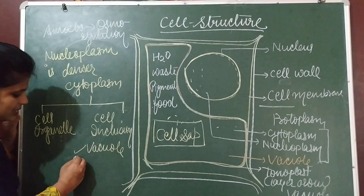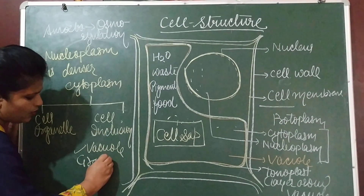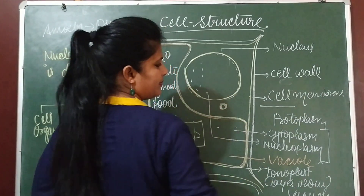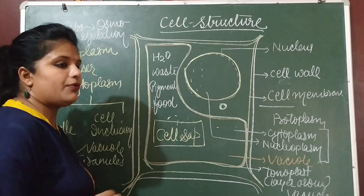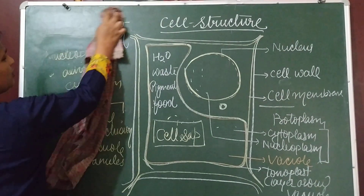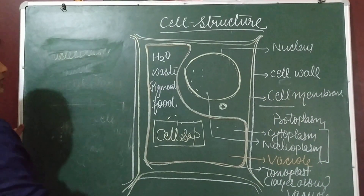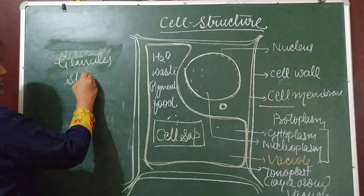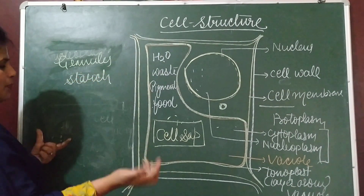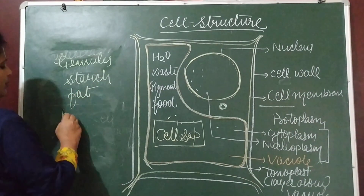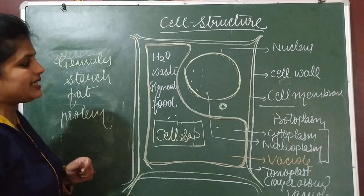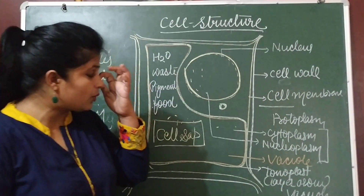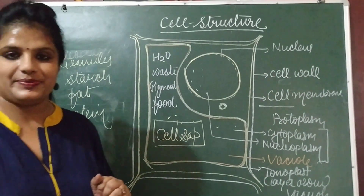The next cell inclusion is granules. Granules are granular, particle-like structures. Granules can be in the form of oil droplets or stored food material like carbohydrates, glucose, fat, and protein. They can also be in the form of starch droplets, fat droplets, or protein droplets and help in protein secretion. In the next video we are going to discuss the nucleus in detail.